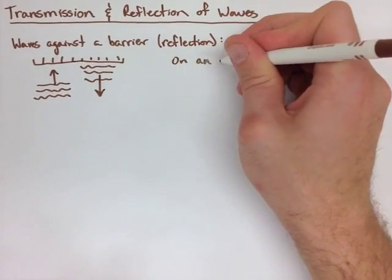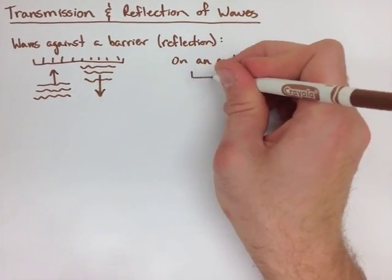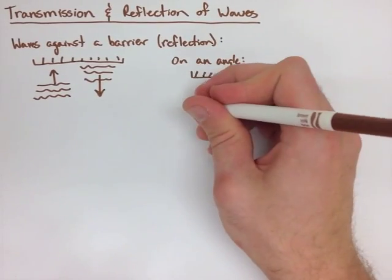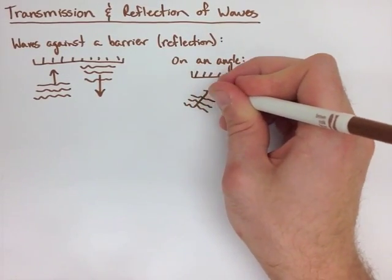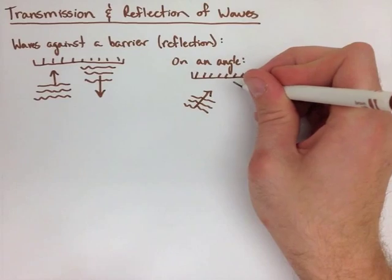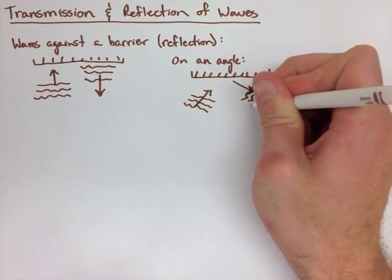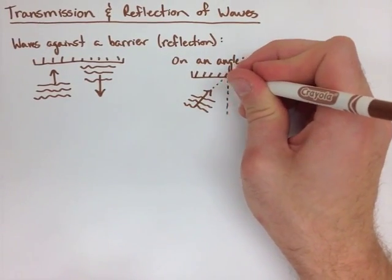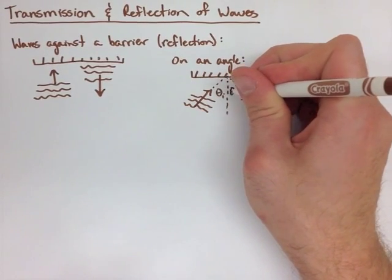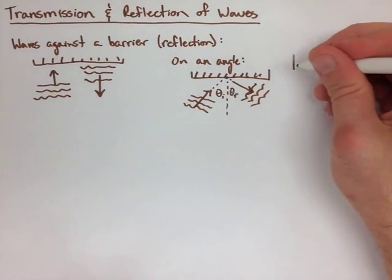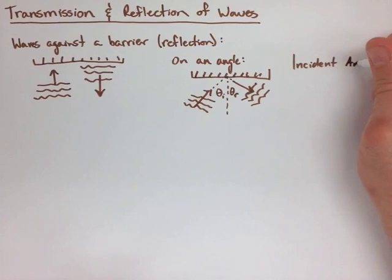This is actually our general rule, but we always look at an angle to make it easier to see. The angle in of a wave is always going to be equal to the angle out. In our first example, the angle is just 90 degrees. In general, we have angle of incidence equals the angle of reflection.